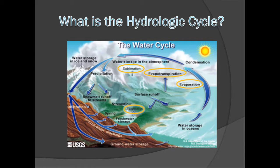Evaporation occurs when water in water bodies becomes a gas and enters the atmosphere. Evapotranspiration occurs when moisture from plant uptake enters the atmosphere. Sublimation occurs at extremely cold temperatures when water in solid form, like snow or ice, changes directly from solid to gas without entering the liquid phase. Once the water is in the atmosphere, it condensates, forming clouds that transport and store the water. The water then leaves the atmosphere through precipitation, either as rain or snow.